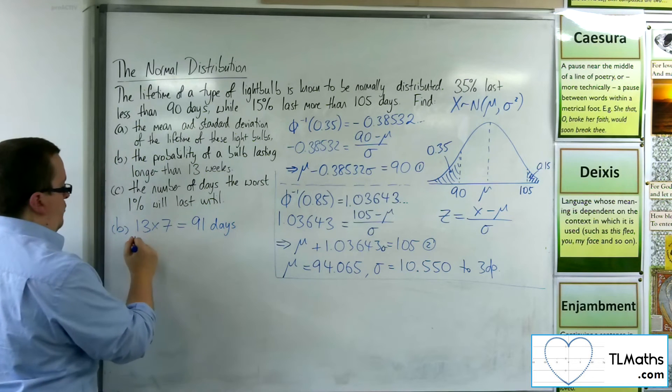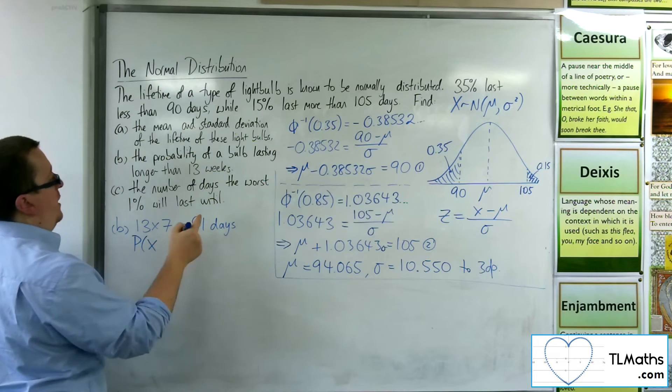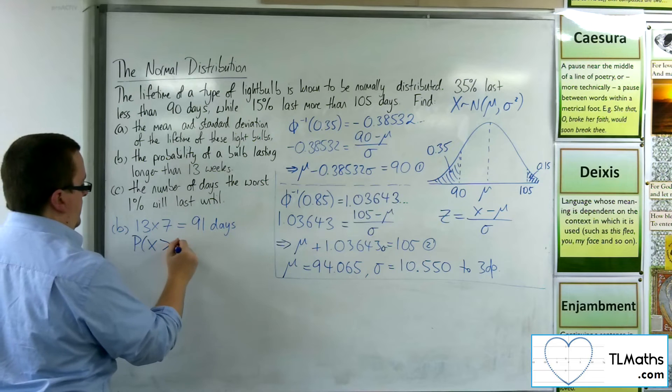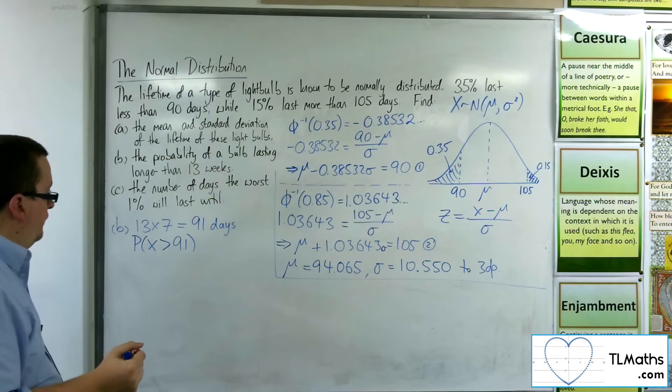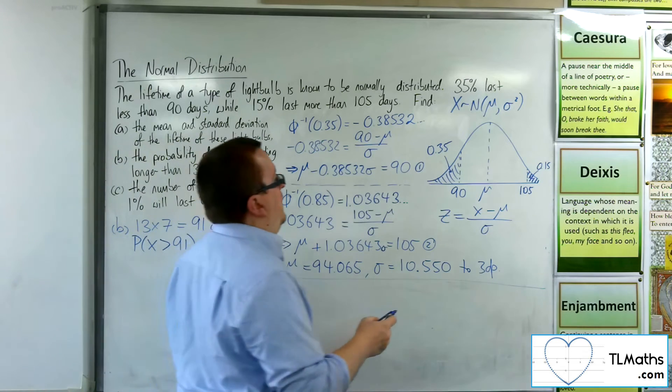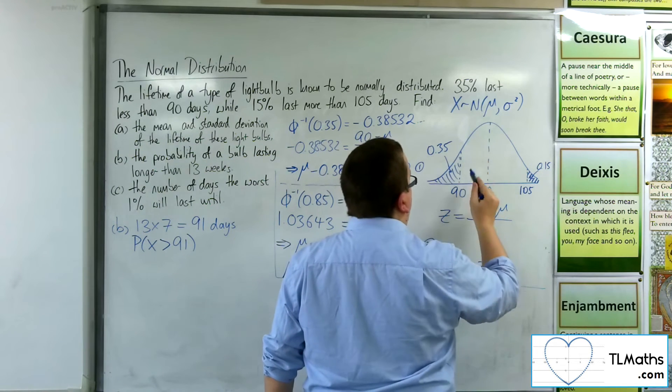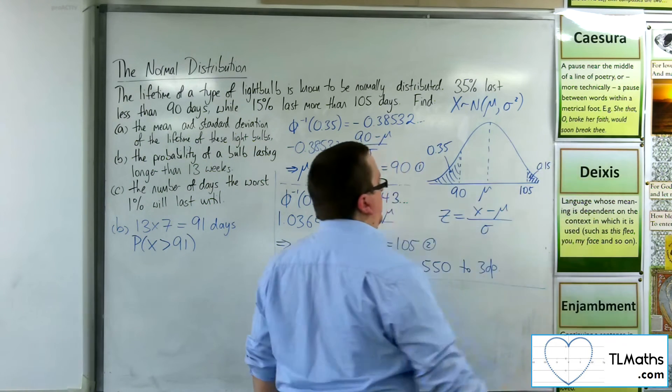So I want to find the probability of x being greater than 91 days. So that's effectively on my diagram going 91. And I want to find that probability, that area.